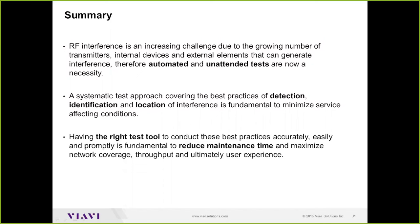Question: What is the quickest way to identify if a source is PIM or external interference? Answer: Run a PIM detection test at the cell site using a PIM analyzer or spectrum analyzer. Within minutes you can identify a PIM — you will see its signature on one specific antenna line. If it's external interference, you'll see it impacting multiple cell sites and sectors across the network, not just one. If you see impact localized to one radio or antenna, that's indicative of PIM rather than external interference.